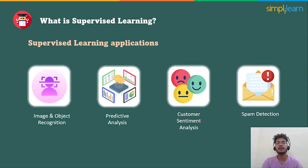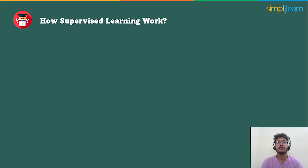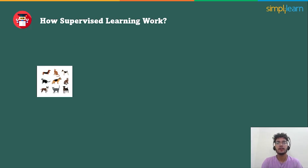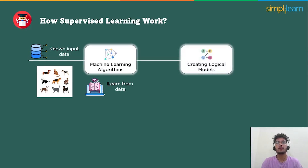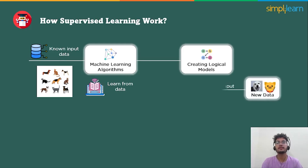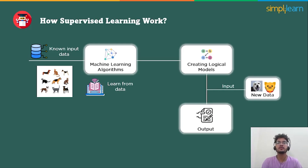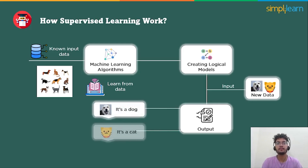Suppose we have a dataset that includes dogs and cats. The first step is that we need to train the model for each dog and cat as per factors like similarity, pattern, shapes, and contrast. After training, we test our model using a new dataset which is unknown to the model, and the task of the model is to identify the new input data. The machine is already trained on all types of similarity, patterns, shapes, and contrast. When it finds new data, it classifies it on the basis of those features and predicts the output.